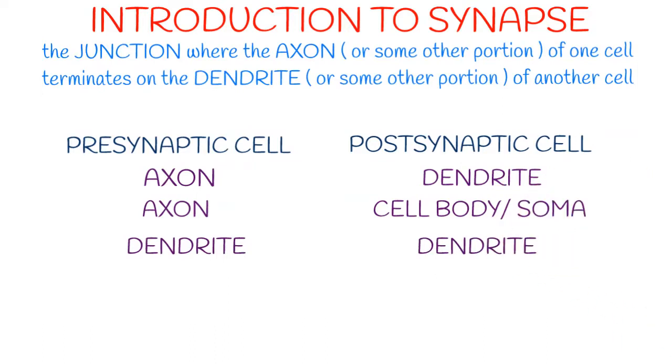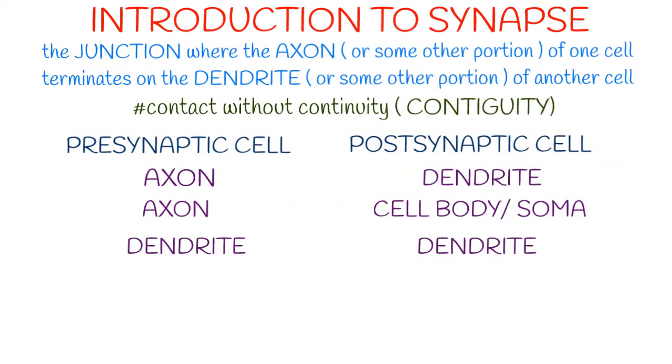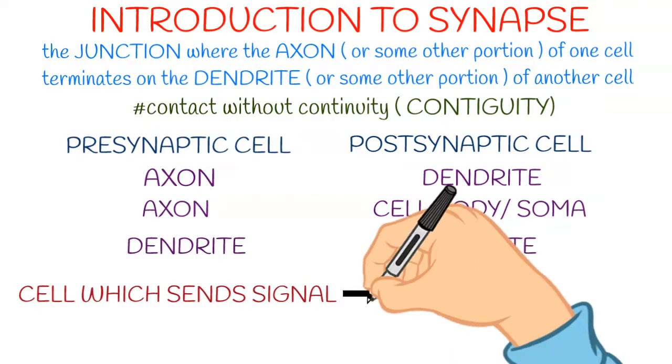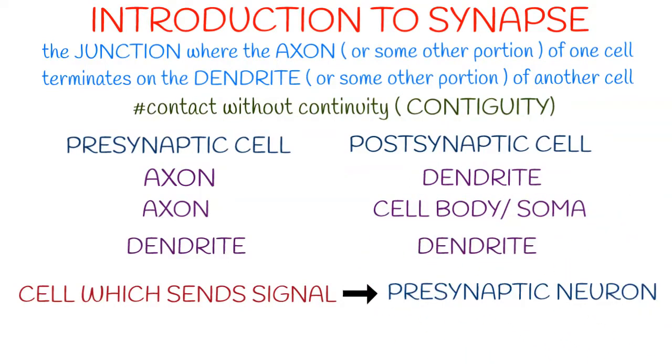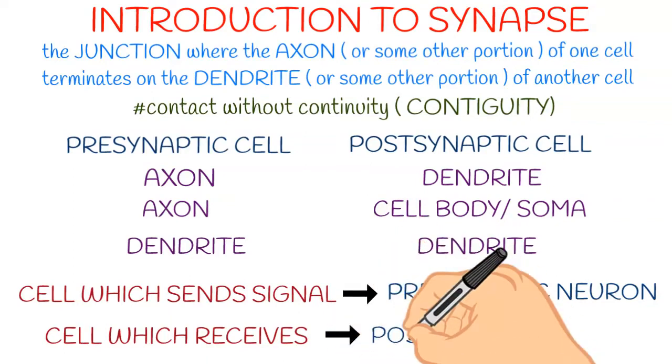Now in one line, what is synapse? It is contact without continuity, which we also call contiguity. Most commonly, synapse involves two types of cells: cells which send signals are known as pre-synaptic neurons, and cells which receive signals are known as post-synaptic neurons.